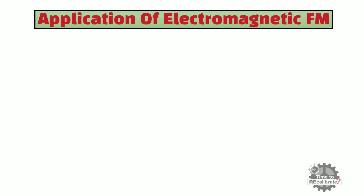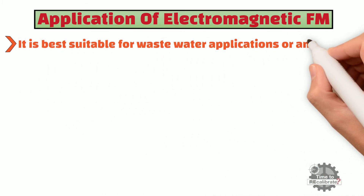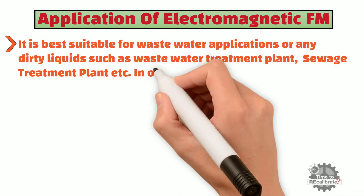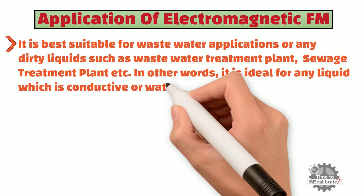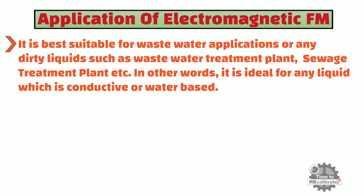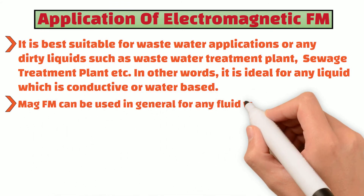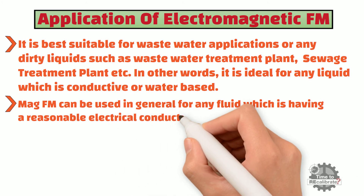Electromagnetic flowmeters are best suited for wastewater applications or any dirty liquids, such as wastewater treatment plants and sewage treatment plants. In other words, they are ideal for any liquid that is conductive or water-based. Mag flowmeters can be used for any fluid having a reasonable electrical conductivity above 10 microsiemens per centimeter.